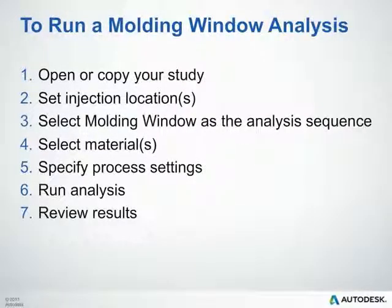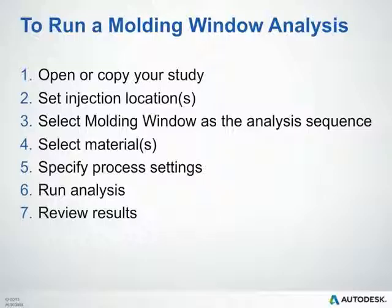There are a few simple steps you will need to accomplish in order to run a molding window analysis. Step one is to open or copy your study. Then you set your injection location or locations, hopefully based on your design decisions or gate location analysis. Then you'll select the molding window as your analysis sequence, select a material, specify your process settings, run the analysis, and review your results.